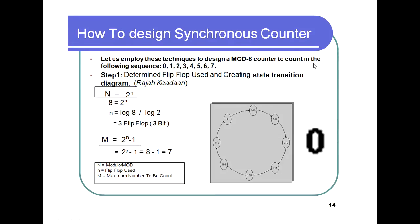Now let us employ this technique to design a mod-8 counter to count from 0 to 7. Step 1 — determine the number of flip-flops. Since 8 = 2^n, taking log of both sides gives n = log8 / log2 = 3. The maximum count value M = 2^n − 1 = 7, and we need n = 3 flip-flops.